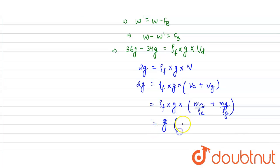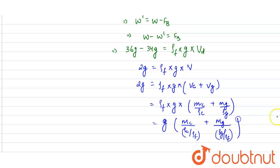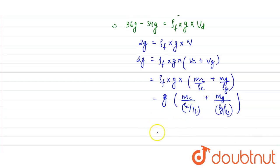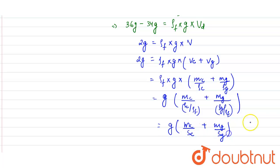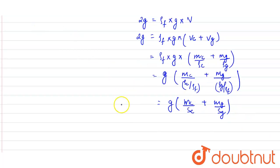Dividing through by density of fluid, we get: g × (mass of copper / (density of copper / density of fluid) + mass of gold / (density of gold / density of fluid)). The ratio of density of a material to density of fluid is its specific gravity, so this becomes: g × (mass of copper / specific gravity of copper + mass of gold / specific gravity of gold) = 2g.